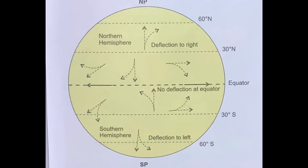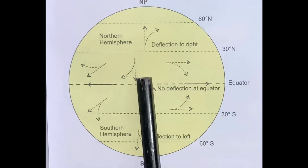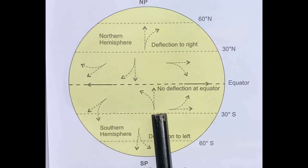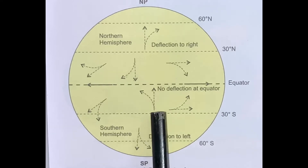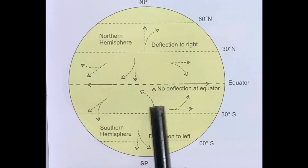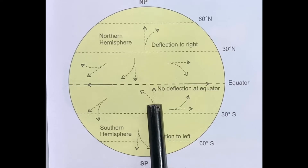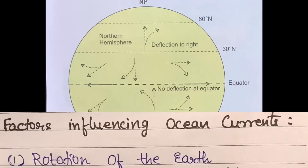This force causes the winds and the ocean currents to deflect to the right in the northern hemisphere and to the left in the southern hemisphere, as clearly shown in this diagram. The straight line shows the original path, whereas the deflection is shown with the help of another arrow.